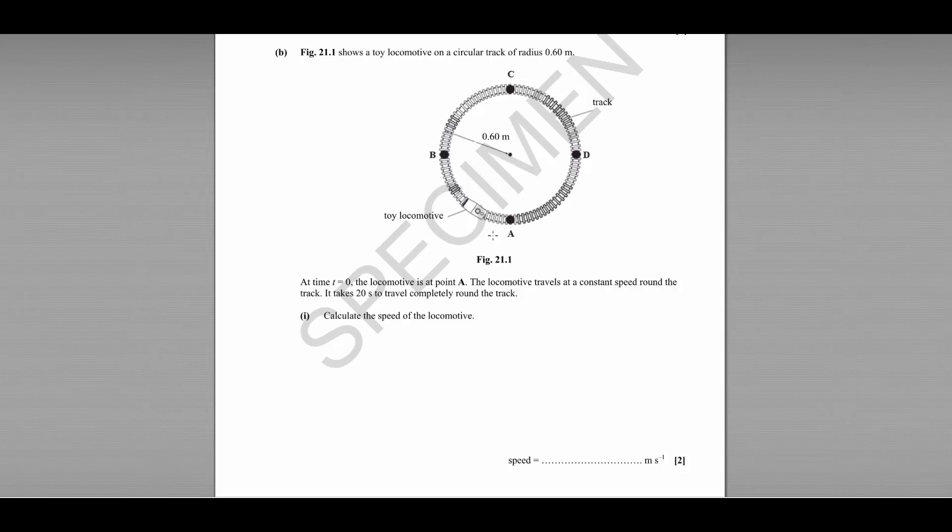We're asked to calculate the speed of the locomotive. For this, the speed is constant—there is no acceleration—so we don't need to use SUVAT. We can use speed equals distance over time.